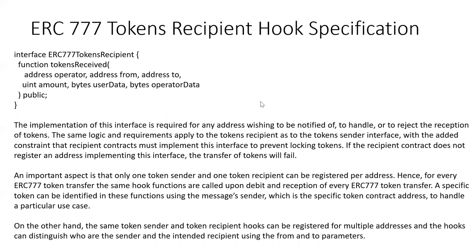The implementation of the token recipient interface is required for any address wishing to be notified, handle, or reject the reception of tokens. This is similar to the sender interface, just focusing on the recipient side. Only one token sender and only one token recipient can be registered per address, covering the debit and reception of ERC-777 token transfers.